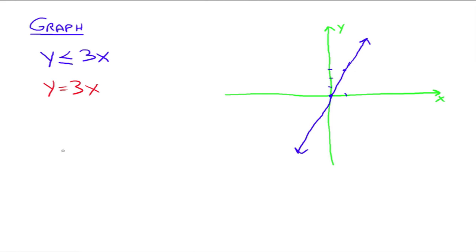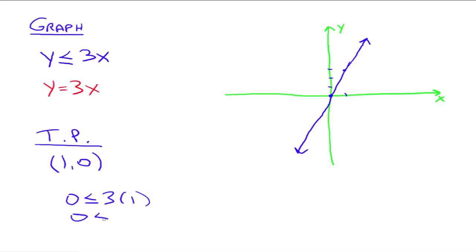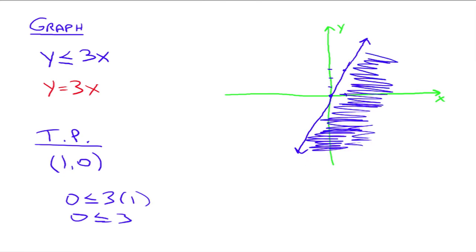Now we take a test point, but this time we can't use the origin because our graph goes through the origin. So we need a different point clearly not on the line — let's take (1, 0). Substituting: Y is 0, X is 1, so 0 is less than or equal to 3 times 1, which is 0 less than or equal to 3. That's true. So we shade the side that our test point was on. Any point in the shaded region will make this inequality true.